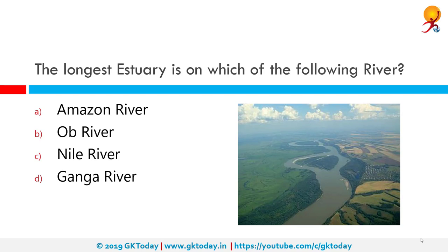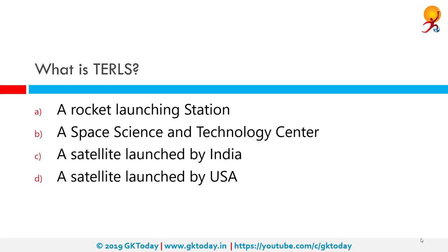The longest estuary is on which of the following rivers? The correct answer is the Ob River. The Gulf of Ob forms at the confluence of the Biya and Katun rivers, which have their origins in the Altai Mountains. It is the westernmost of the three great Siberian rivers that flow into the Arctic Ocean — the other two being the Yenisei River and the Lena River. The Gulf of Ob is the world's longest estuary.